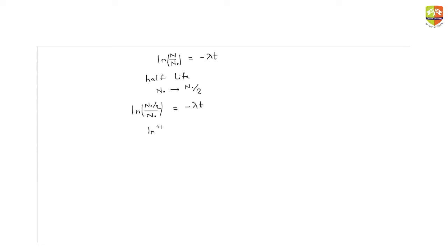This is equal to minus lambda times t. So log of half, which is equal to minus log 2, is equal to minus lambda t_half. So t_half is equal to log of 2, natural log of 2, divided by lambda, and natural log 2 the value for that is 0.693.